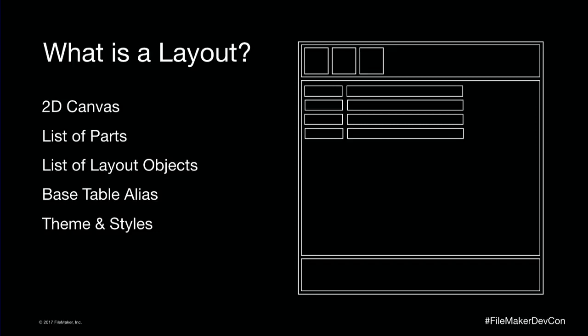So if you convert an old solution into FileMaker 12 or later, that edge is going to be set up right against that right object, which isn't really what you always want. Now you have more freedom — you can set that however you want and leave a little extra space. Inside of that 2D space, we have a list of parts, a list of objects, a base table alias from where we start fetching data, and then the themes and styles that tell us not just what to draw, but how to draw it.